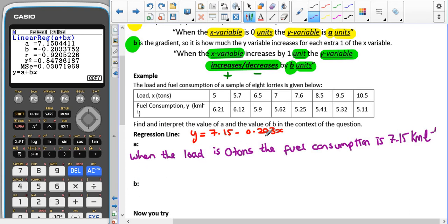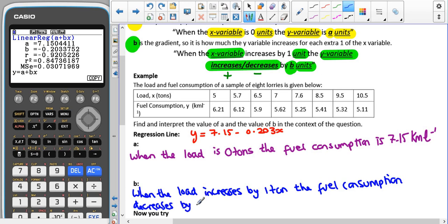Then when we're interpreting the value of b, that's our minus 0.203, we have when the load increases by one tonne, the fuel consumption, and because the value for our b is negative, that means that we're going to go for decreases. So decreases by 0.203. And again, the units for y are kilometers per liter.